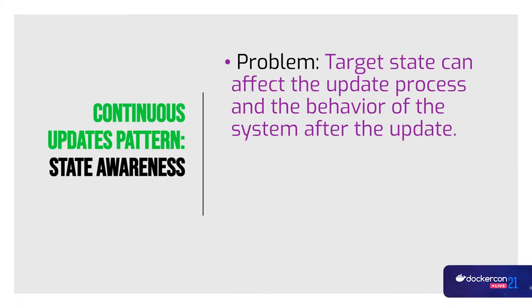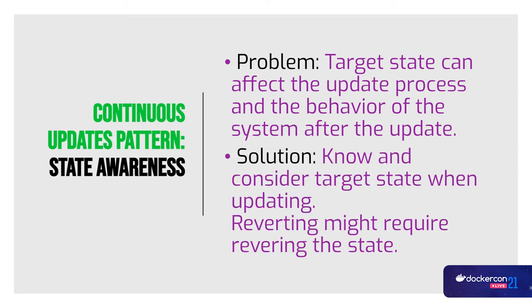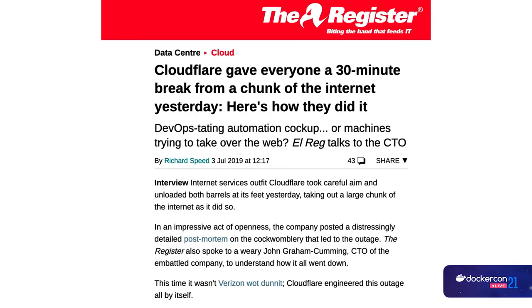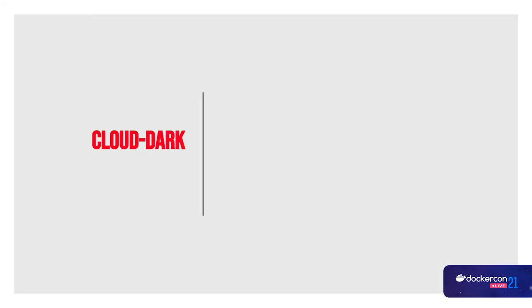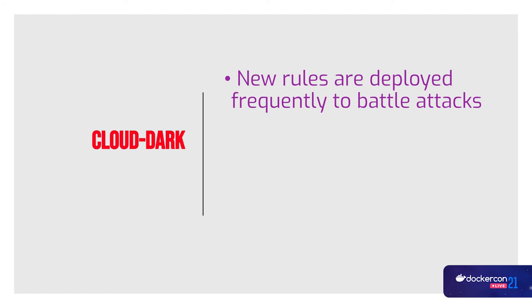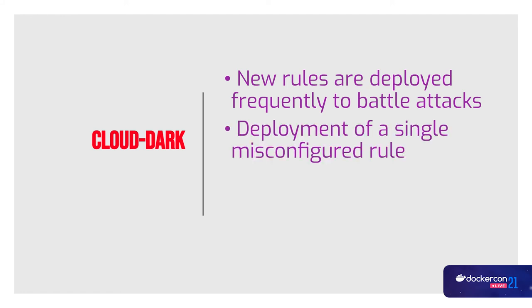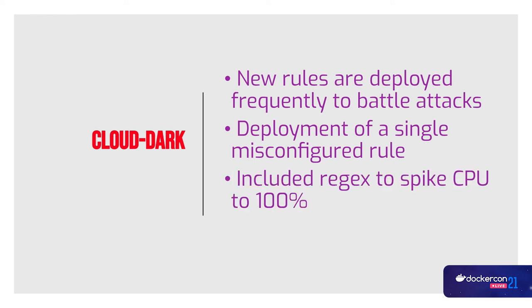Target state can affect the update process and the behavior of the system after the update. The solution is to know and consider target state when updating — reverting might require reverting the state. Some of you heard about Cloudflare giving everyone a 30-minute internet outage. They added new rules deployed frequently to battle attacks, then a deployment of a single misconfigured rule included a regex that spiked CPU to 100% — and it affected everything because services depended on each other.